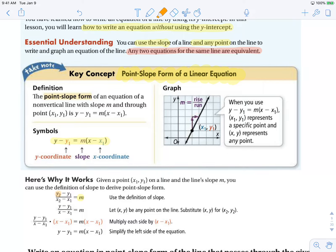Replace y2 and x2 with just y and x representing any other point on the line. Then the next step is we take that denominator, which is x minus x1, and we multiply it to both sides.